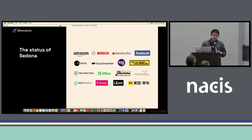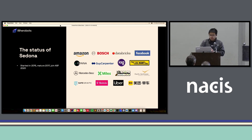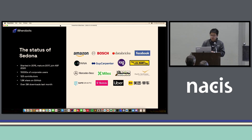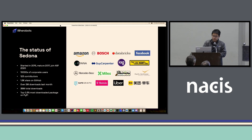Here's a quick report on the status of Sedona. On the right-hand side, you can see many companies that are actually using Sedona in production. Sedona is a research project I started in 2015, and it became mature in 2017. It joined the Apache Software Foundation in 2020. Right now it has more than 10,000 copy users and over 120 contributors on GitHub. It has 1.9 thousand GitHub stars, over 2 million downloads last month, and overall its downloads have exceeded 38 million. Sedona is ranked among the top 0.3% most downloaded packages on PyPI — it is a very popular open source software.